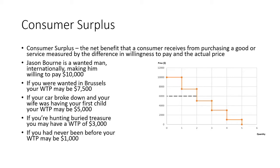We'll start with Jason Bourne. He's a wanted man internationally and he's willing to pay $10,000. If he can get a ride for $6,000, that means his consumer surplus is the difference between $10,000 and $6,000. So he has a consumer surplus of $4,000.